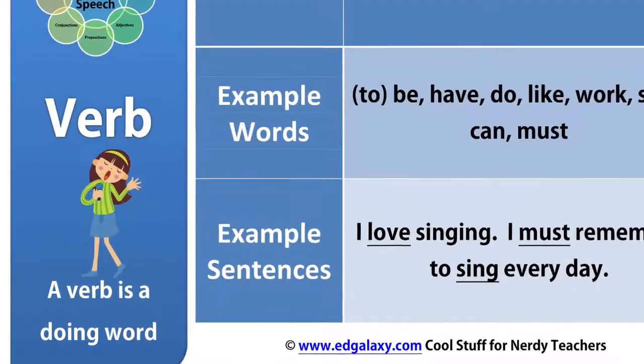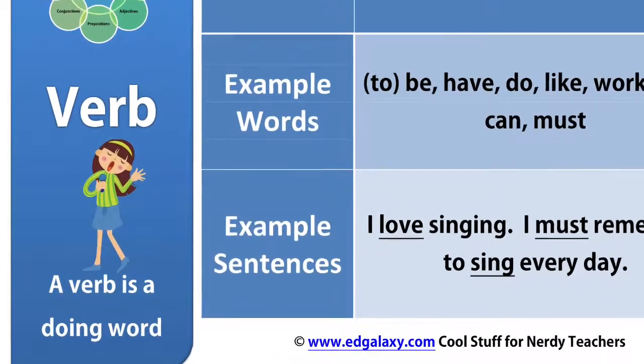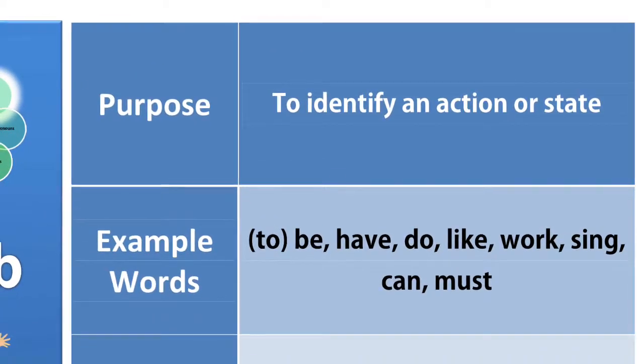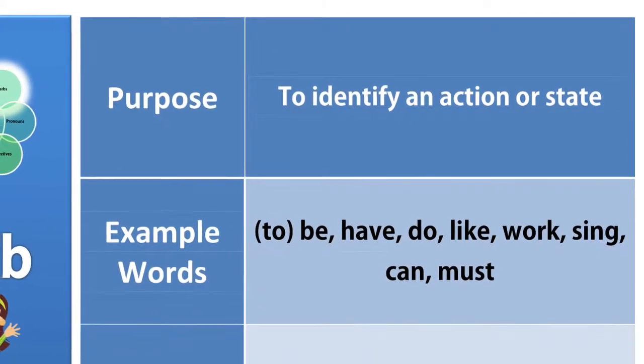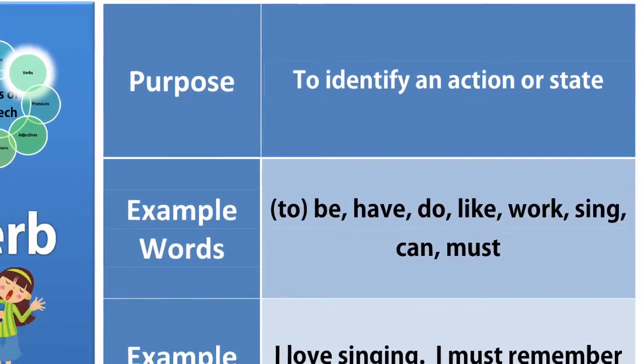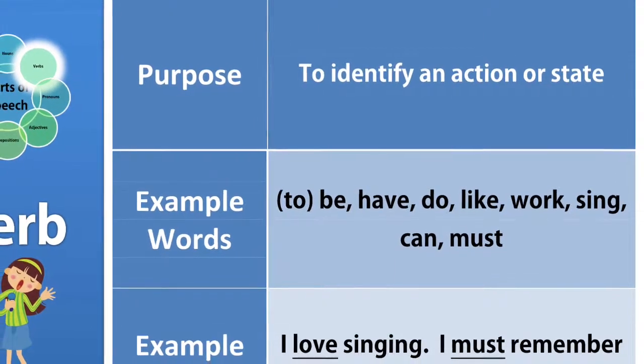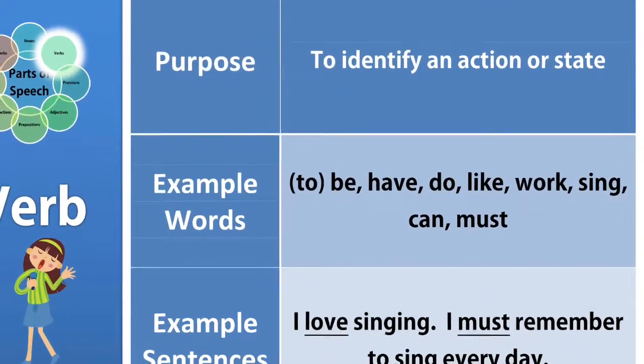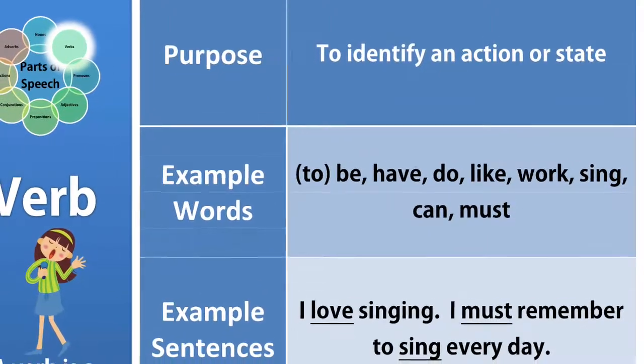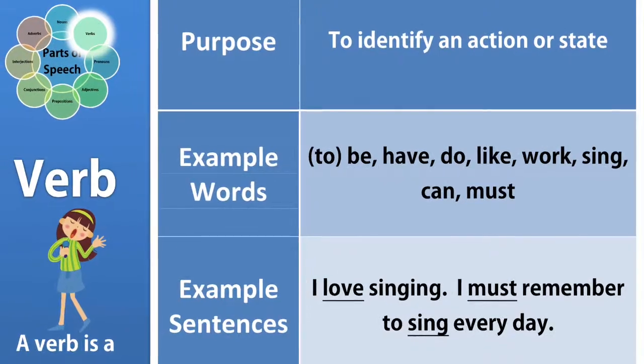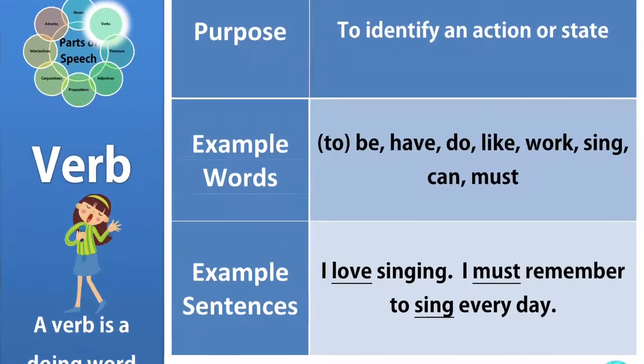A verb. What is a verb? A verb is a doing word. The purpose of a verb is to identify an action or state. Example words: to be, have, do, like, work, sing, can, and must. These are things that you can do. For example, these are some example sentences: I love singing. I must remember to sing every day.